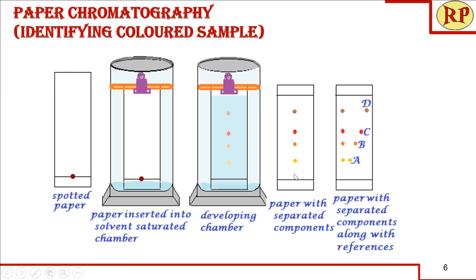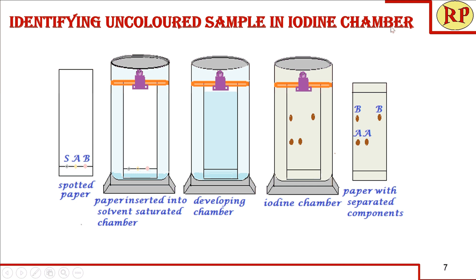Most samples, especially organic samples, are generally uncolored. In such cases, you spot the sample along with reference samples A and B — for example, A as the reactant and B as the product when studying the progress of a reaction. All three spots will be invisible to the naked eye. You develop the paper in the same way, but you need to visualize the spots using a visualizing agent.